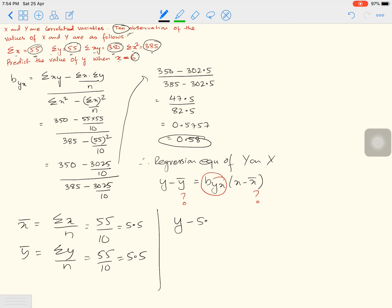So I'll put it here now. Y minus 5.5 equals 0.58 times X minus 5.5. So do your calculation. Y minus 5.5 equals 0.58X. If you multiply these two, this will give me 3.19. I won't do this, so let me transpose.